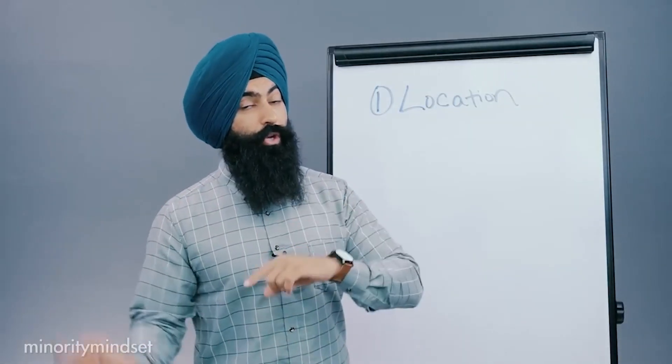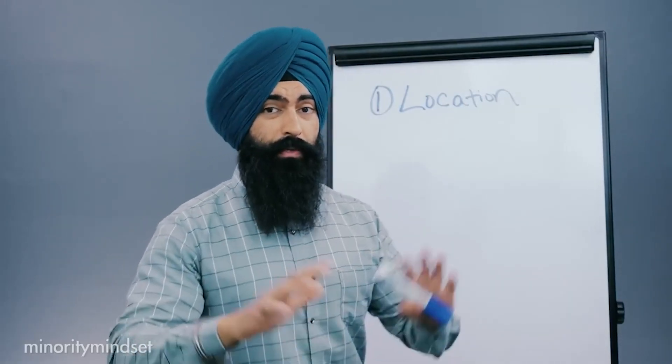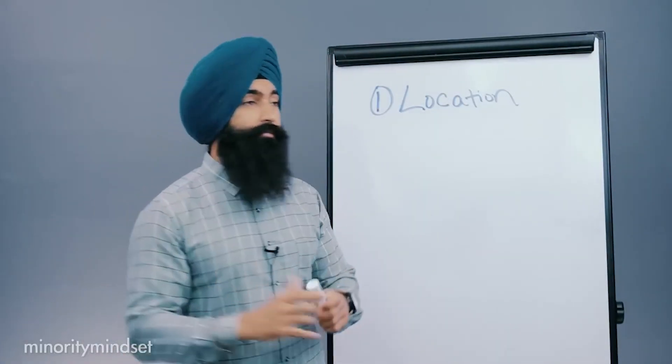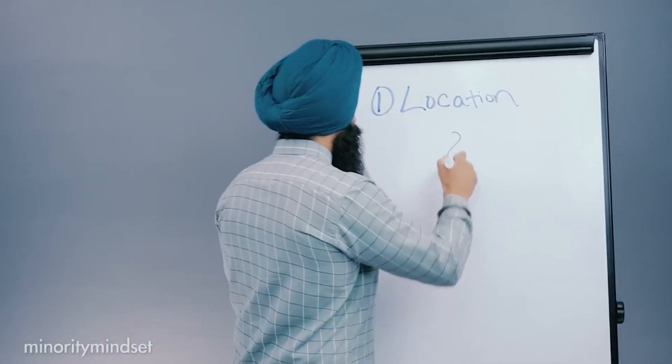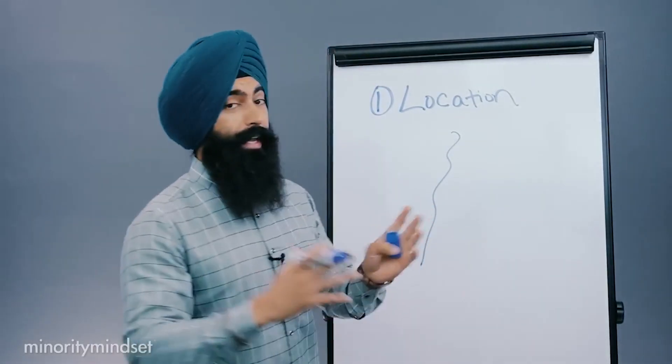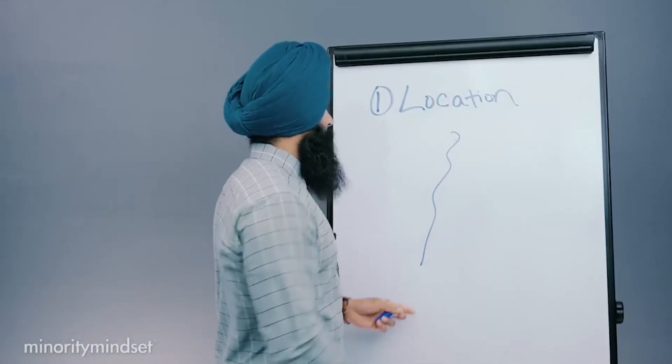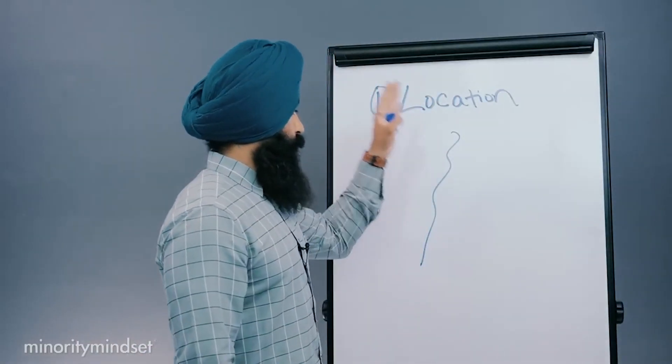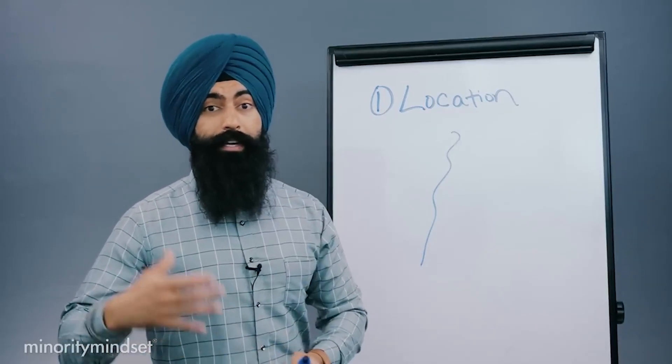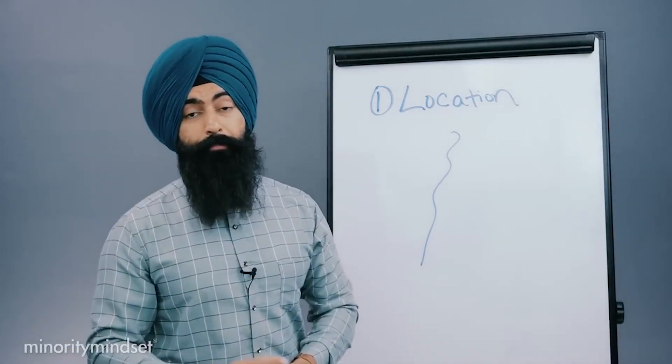You also really want to pay attention to barriers and boundaries because what you'll see happen is many cities will have some sort of boundary or barrier that will divide a good part and a bad part of a city. Sometimes it'll be a highway. Sometimes it'll be a bridge. Maybe it's a lake. Maybe it's something, a railroad track in the middle that divides a good part of a city from a bad part of a city.